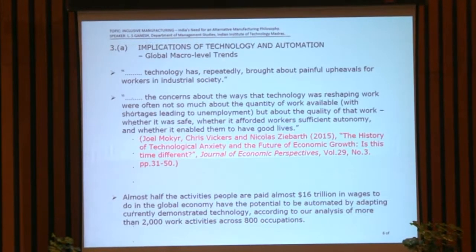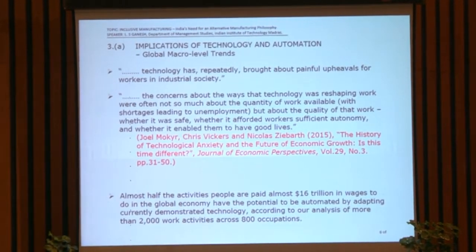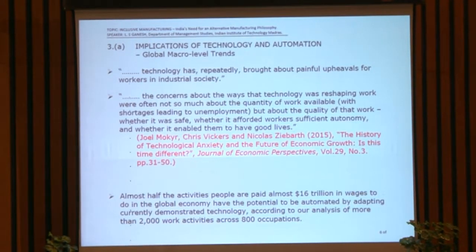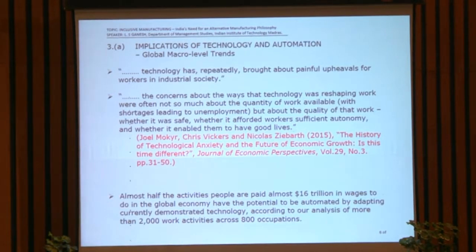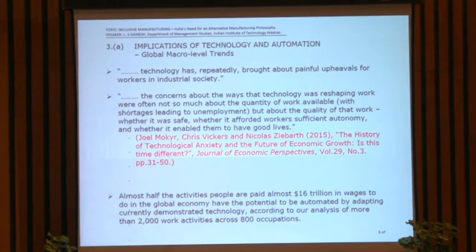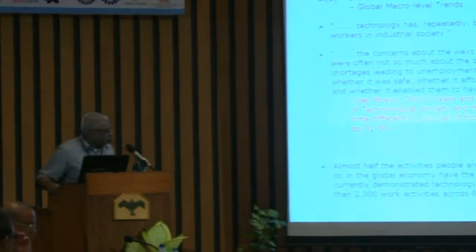The third part covers implications of technology and automation — some global macro-level trends. This is where the story starts: why India needs a different philosophy of manufacturing. Technology has repeatedly brought about painful upheavals for workers in industrial society — Mokhi Rayaal, 2015, 'The History of Technological Anxiety,' Journal of Economic Perspectives. Almost half the activities people are paid — almost 16 trillion dollars in wages — in the global economy have the potential to be automated. That's a very large scale.